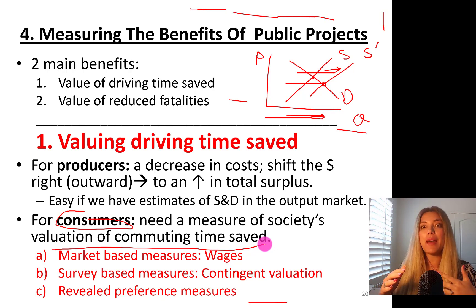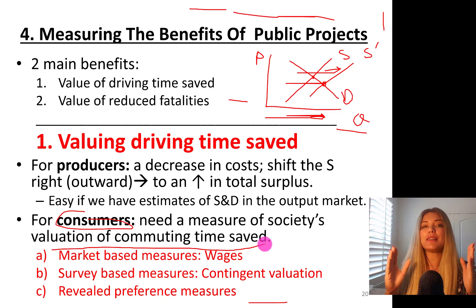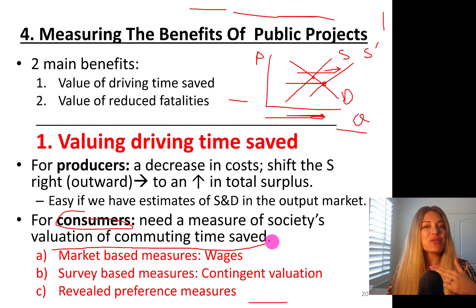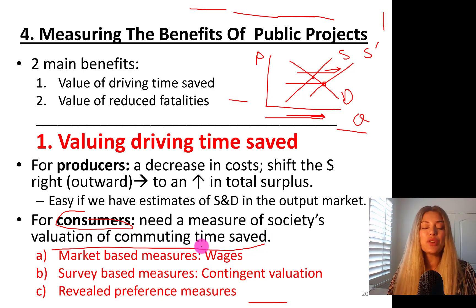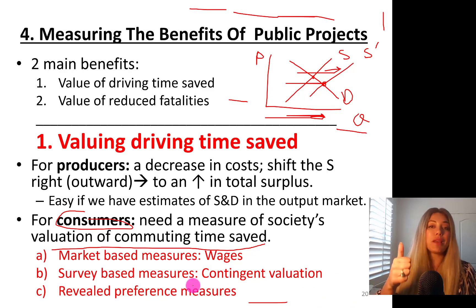On a very bad day, 12 minutes. So, 20 minutes total versus 120 minutes. How do I value that 100 minutes of my time? You can value it based on a wage rate, because you could be working instead of just sitting in traffic. For consumers, we need a measure of society's valuation of commuting time saved. You can use market-based measures — that's the wages. If I get paid $60 per hour and I'm saving one hour and 40 minutes, that's $100 saved.